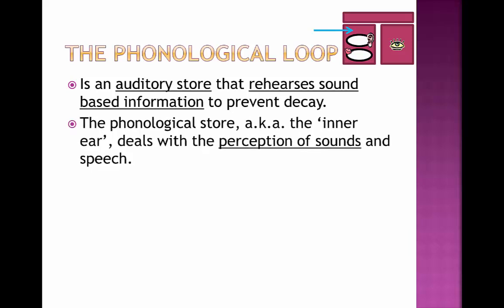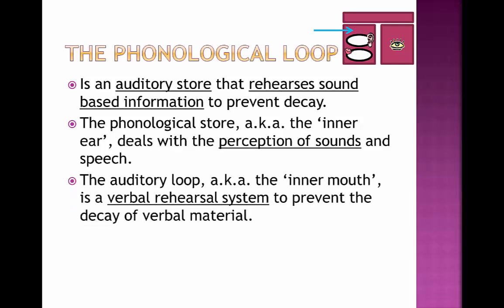The phonological loop has two subcomponents, shown as two oval-shaped boxes on the diagram. The first is the phonological store, otherwise known as the inner ear, which deals with the perception of sounds and speech. The second is the articulatory loop, known as the inner mouth, which is a verbal rehearsal system to prevent the decay of verbal material. So the phonological store perceives the sound of speech, and the articulatory loop rehearses that verbal material.